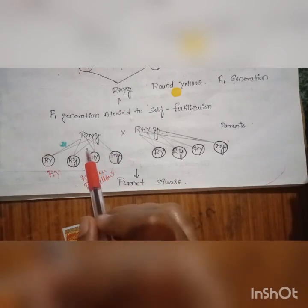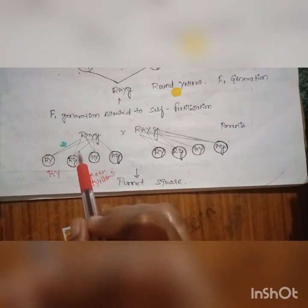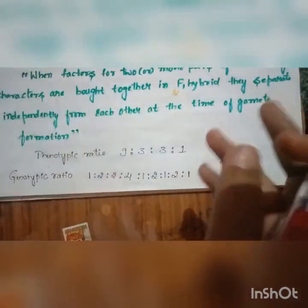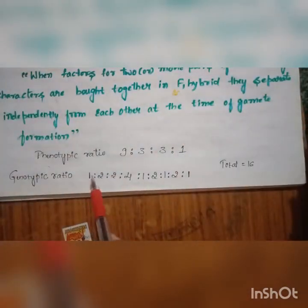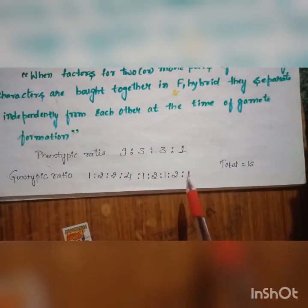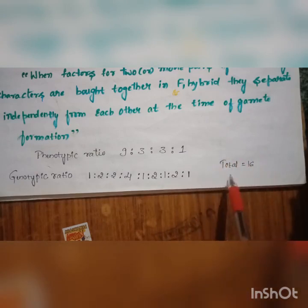Remember, the phenotypic ratio of dihybrid cross is 9:3:3:1, whereas the genotypic ratio of dihybrid cross is 1:2:2:4:1:2:1:2:1, totaling 16 plants. Thank you.